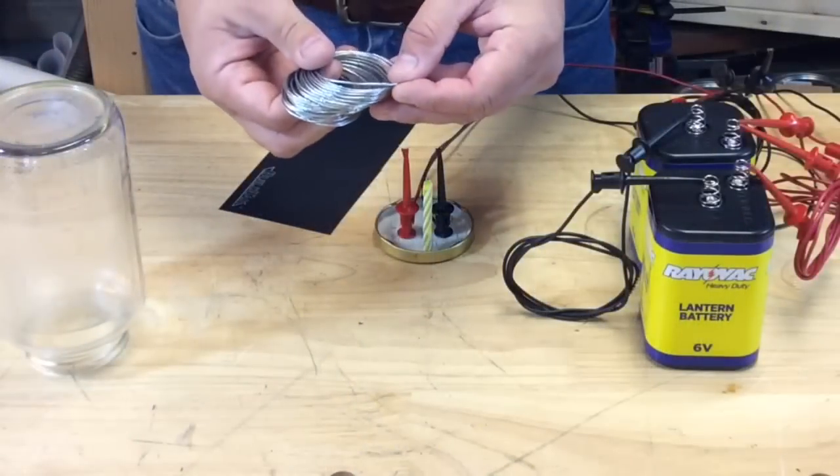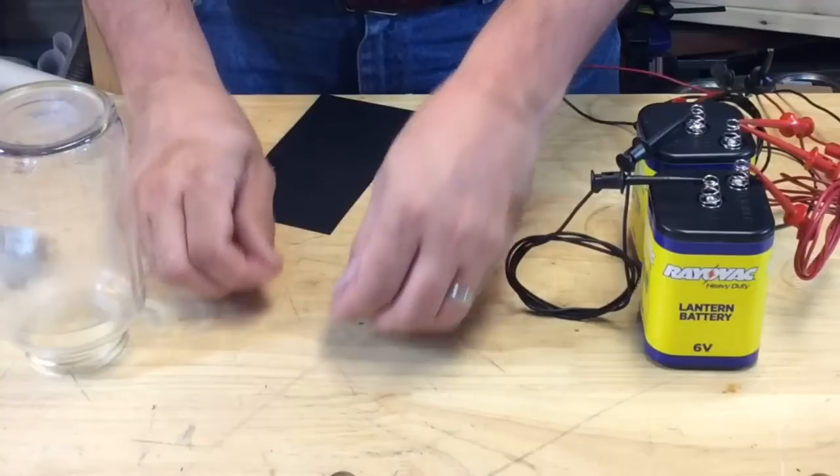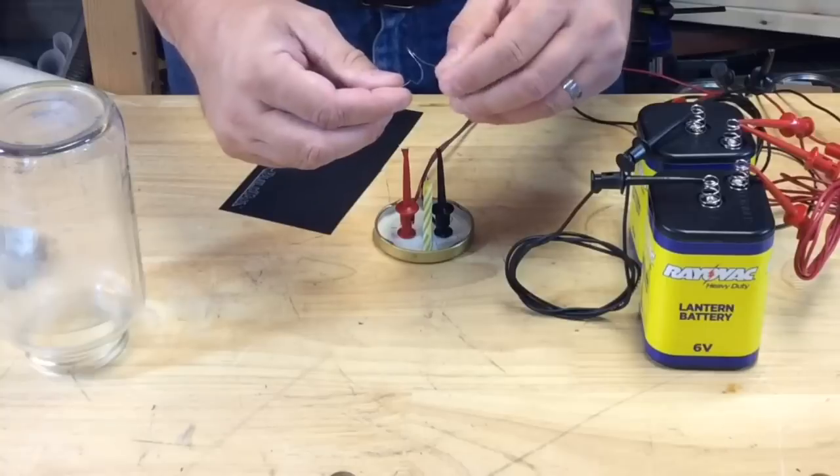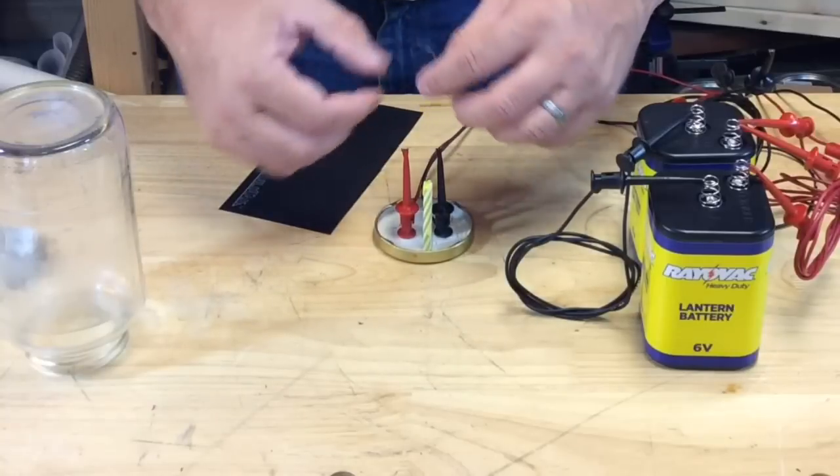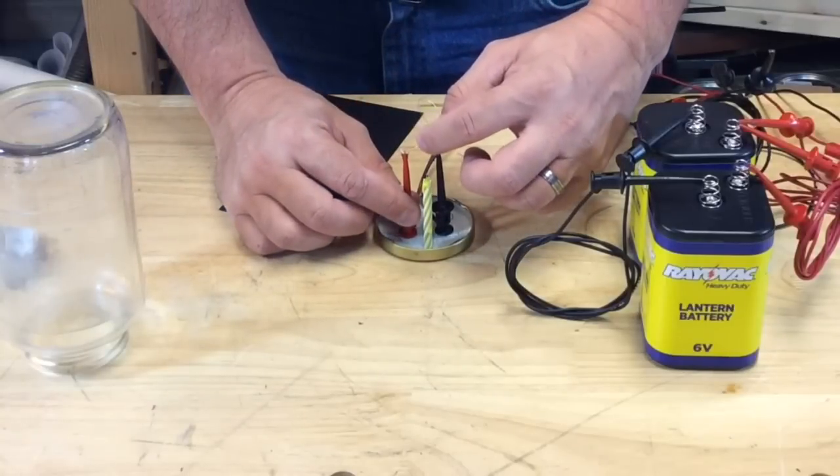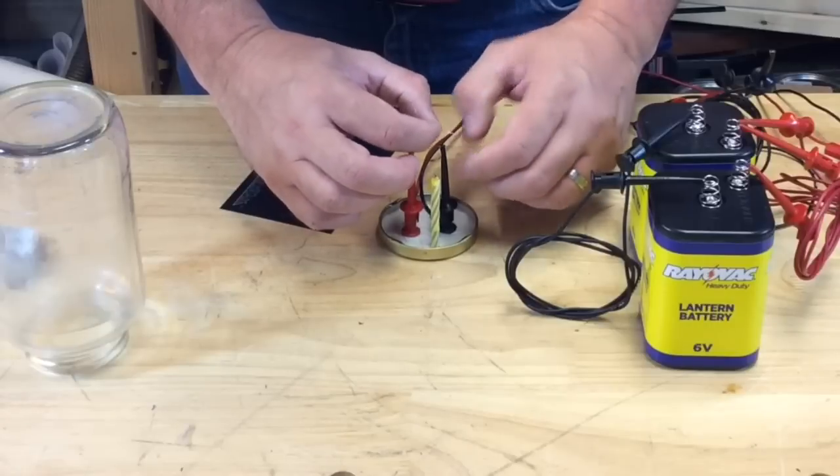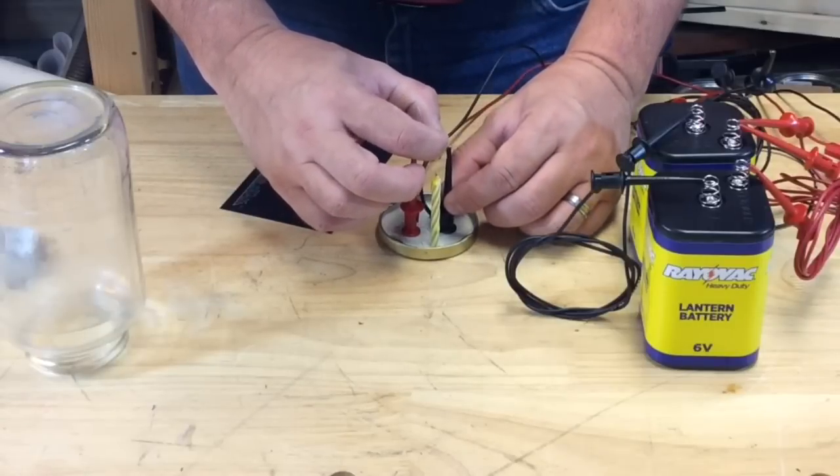So this inspired me to reproduce an experiment I did many years ago. I took some picture hanging wire and I took a strand out of it about three inches long and shaped it into a filament. And then I clipped this filament between two test leads. Now these test leads are mounted on top of a jar lid because I'm going to enclose this inside a jar.